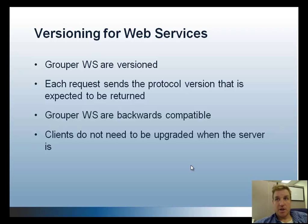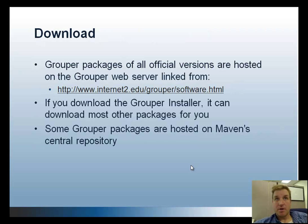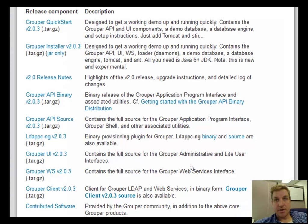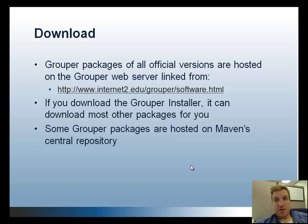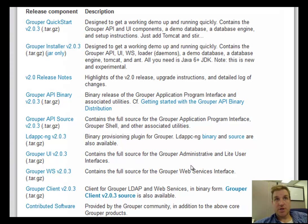To download Grouper, there's a link on the web server that has all the packages. If you download the Grouper installer, it can download all the packages for you — or most of them — and install them for you. Some Grouper packages are hosted on Maven's central repository. Here is a screenshot of the web page that has all the download links — you can right-click on any of those links and download the tarballs.